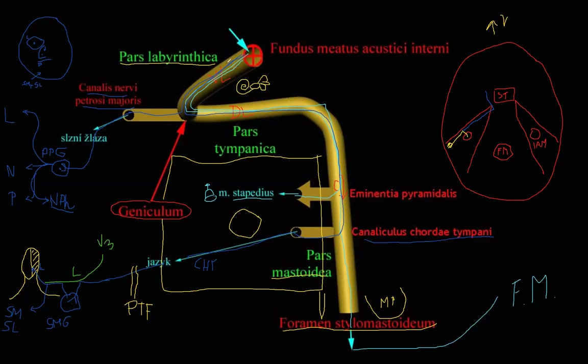Summary of glands supplied by the facial nerve: lacrimal, nasal, palatine, nasopharyngeal — via the great petrosal nerve and pterygopalatine ganglion — and lingual, submandibular, sublingual — via the chorda tympani and submandibular ganglion.